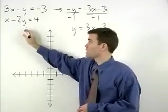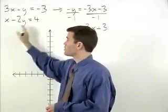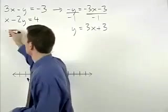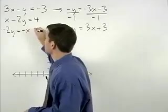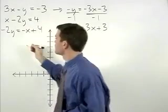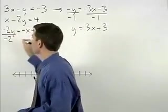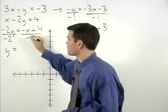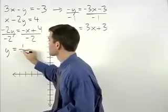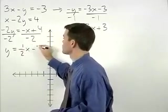For our second equation, subtract x from both sides to get negative 2y equals negative x plus 4. Divide both sides by negative 2 to get y equals positive one half x minus 2.